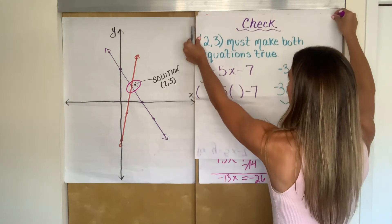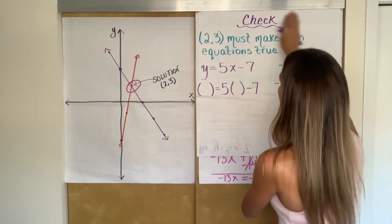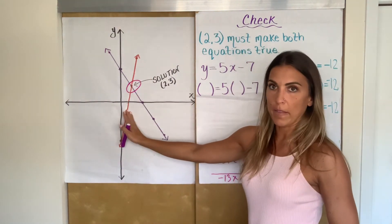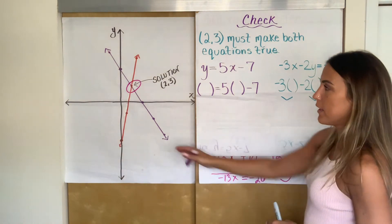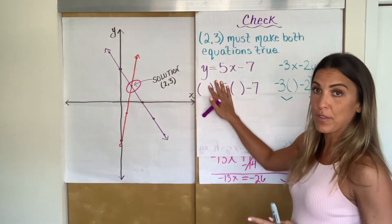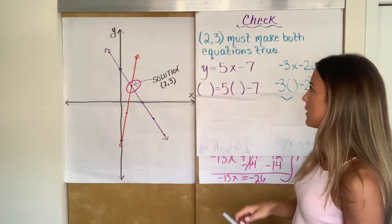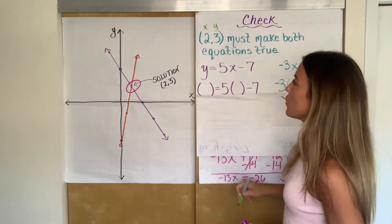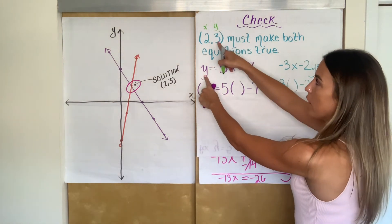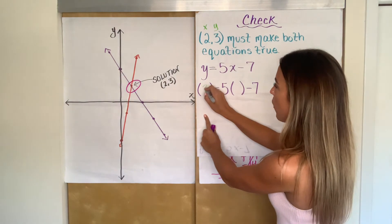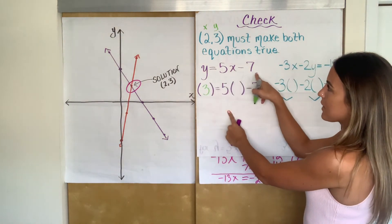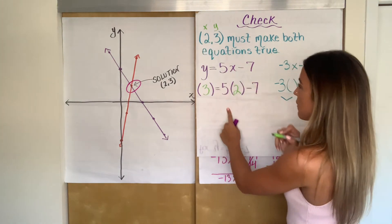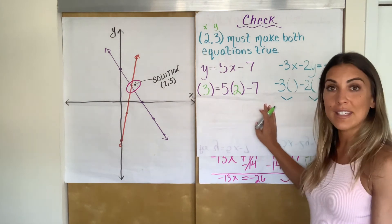So in order to check, 2, 3 must make both equations true. So 2, 3 has to be on the purple line and it has to be on the red line. So the way that we're going to check, instead of graphically, we're going to check algebraically to see if that's true is we're going to make sure if that point makes these equations true. So I'm going to substitute. My 2 is my X, my 3 is my Y. So wherever I see a Y, I'm going to write 3 instead. So I'm going to substitute Y with 3. Y equals 5X minus 7. That was our first equation. Instead of writing X now, I'm going to substitute in what I think was my correct X value. And now we're going to evaluate and see if we get a true statement.